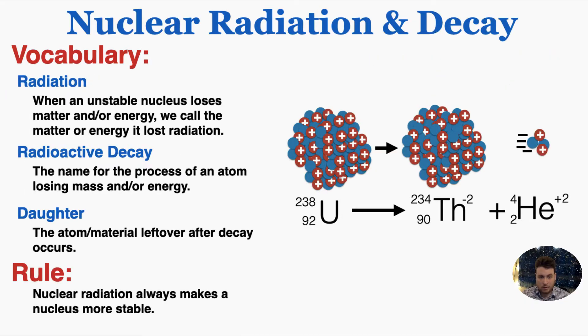When an unstable nucleus loses matter and/or energy, we call the matter or energy it lost radiation. Radioactive decay is the name for the process of an atom losing mass and/or energy.